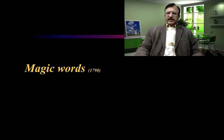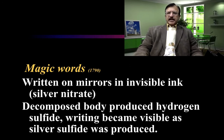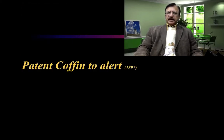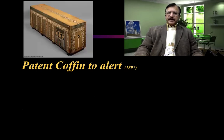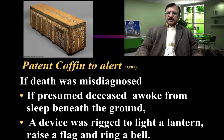Then came the magic words. In 1790, these magic words were written on a mirror with invisible ink, usually silver nitrate. A decomposing body would produce hydrogen sulfide, which combined with the silver nitrate, making the writing visible as silver sulfide — the message reading 'I am dead now.' Then in 1897, a patent coffin was designed: if death was misdiagnosed and the person awoke underground, a device would light a lantern, raise a flag, and ring a bell.